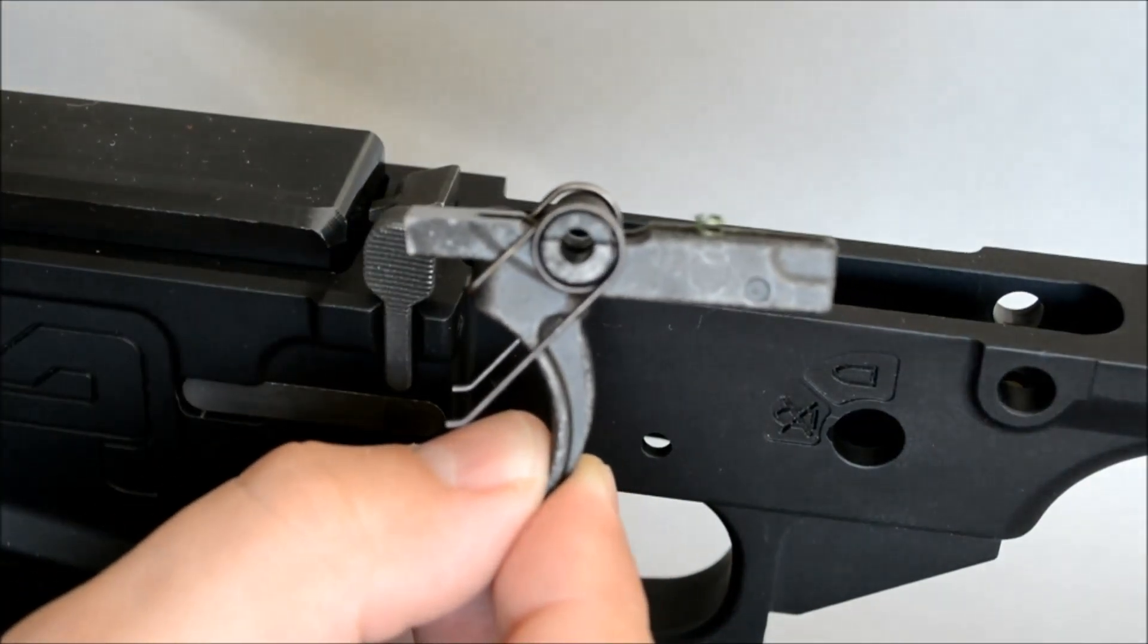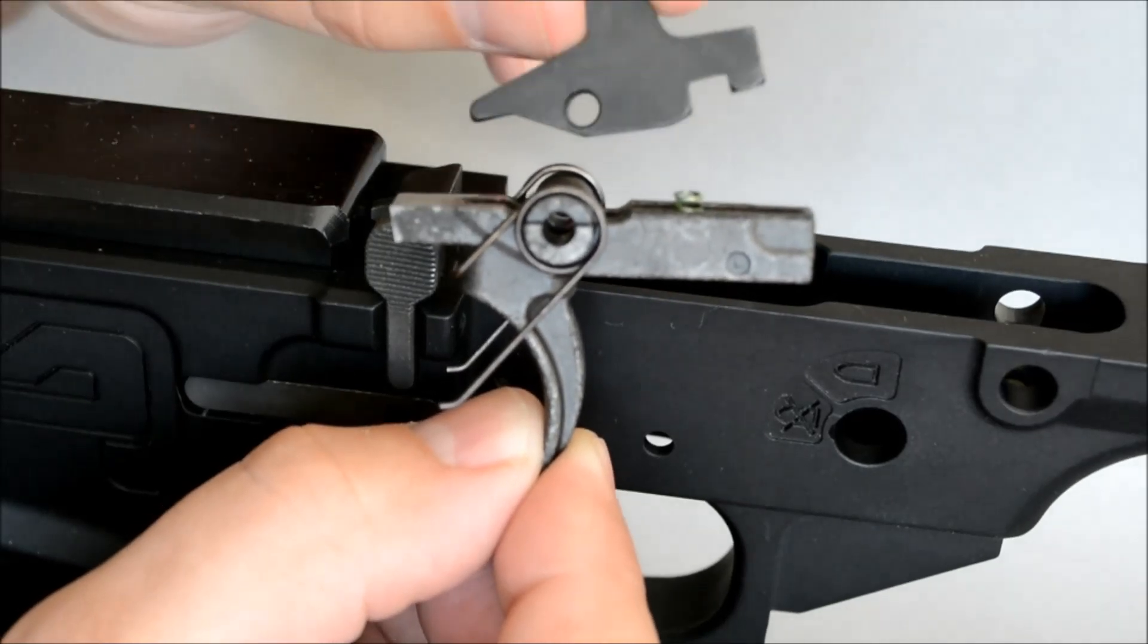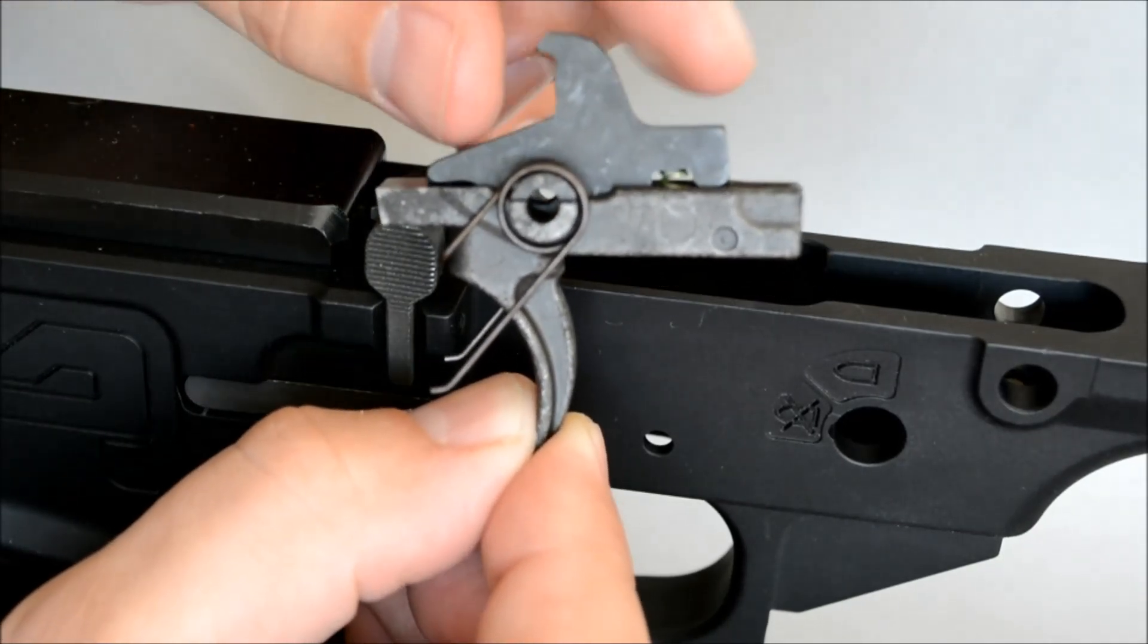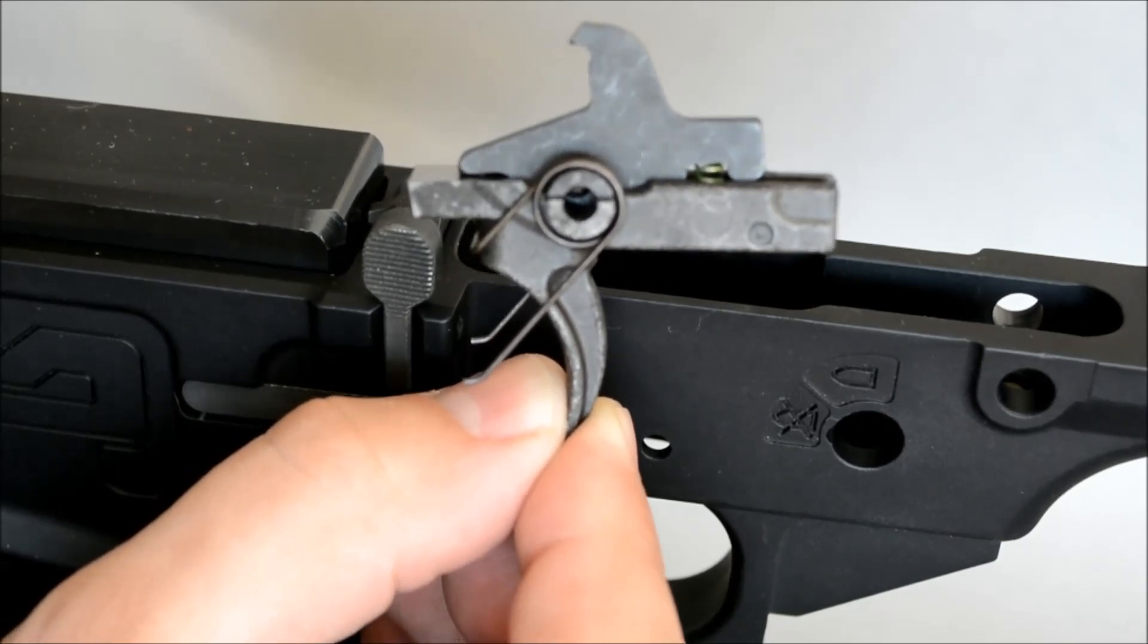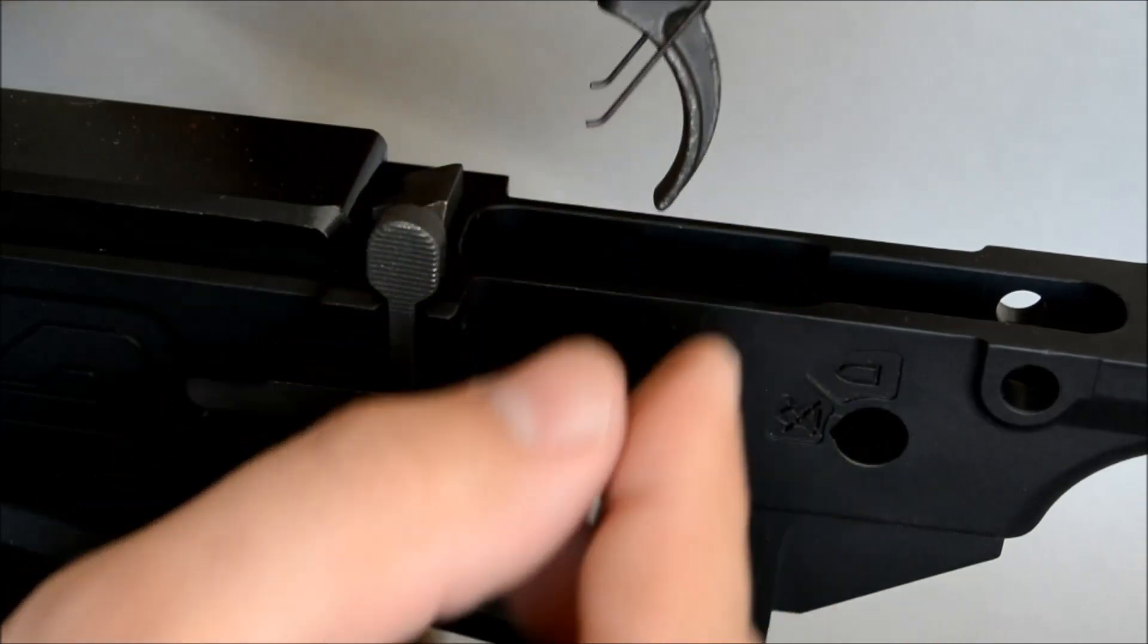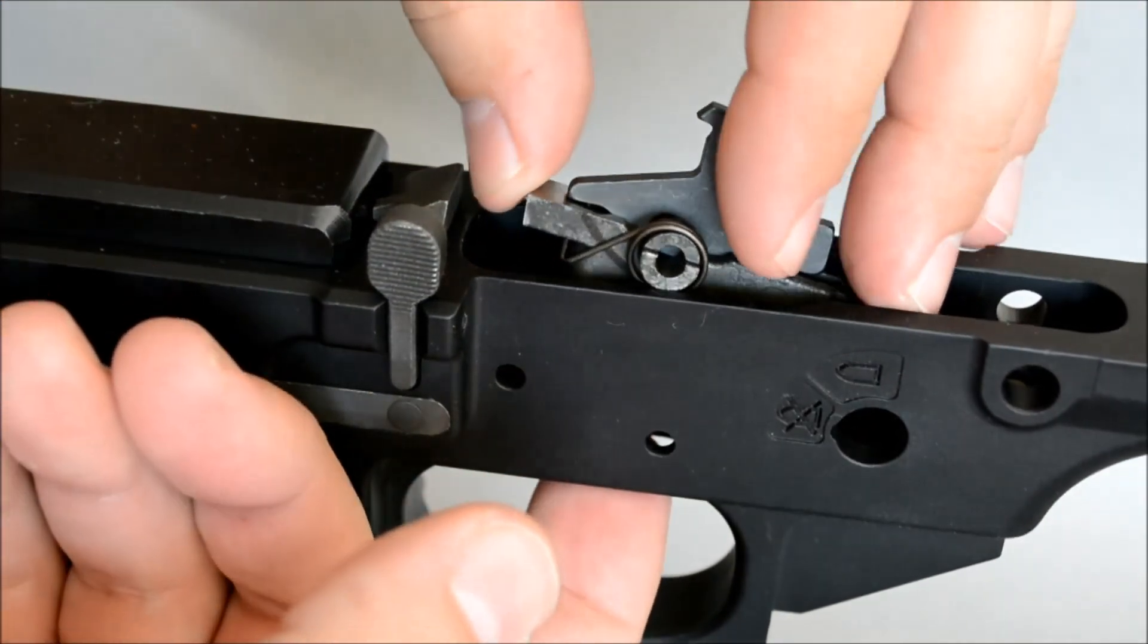So take your trigger with the spring on there and then take your disconnector and just put it right into place like that. Now some people like to install these separately. You can do whatever you'd like. I just like to do them at the same time. So go ahead and put that into position in the receiver.